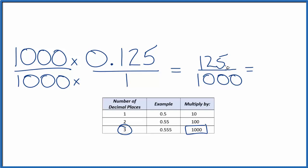25 goes into 125 five times. 25 goes into 1,000, that goes into it 40 times. We're almost there. If I divide 5 by 5, that gives me 1. If I divide 40 by 5, that gives me 8. And I can't reduce this any further.